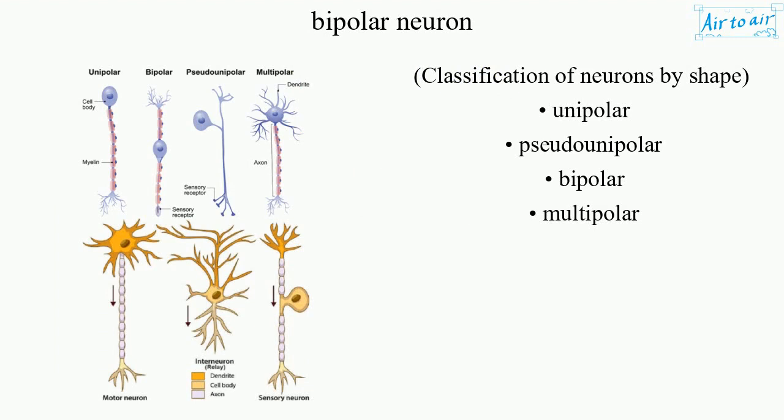Classification of neurons by shape: unipolar, pseudounipolar, bipolar, multipolar.